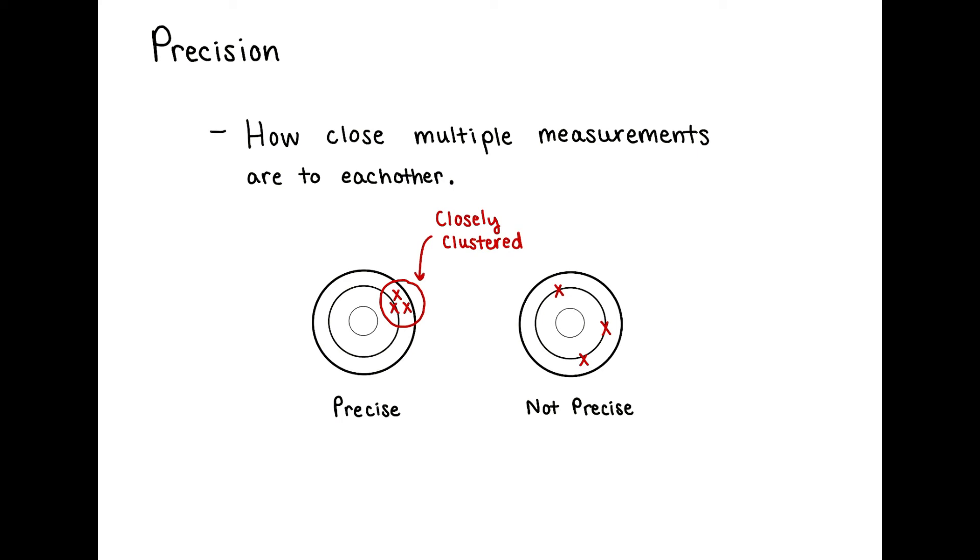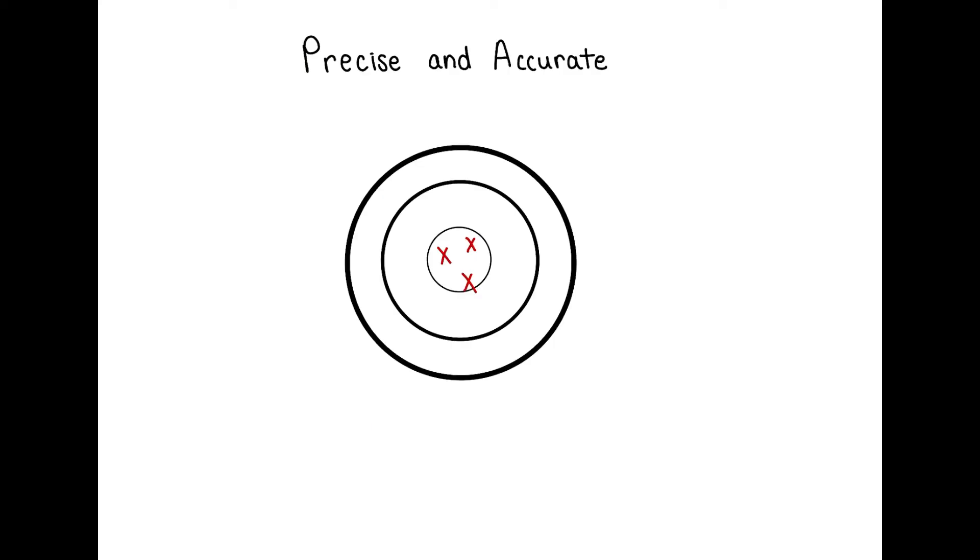Measurements can be both precise and accurate, which is what I've shown with the bullseye below. All of my replicate measurements are very closely clustered together, which means they are precise. They are also on the bullseye, which means they are accurate because they're close to the true value.